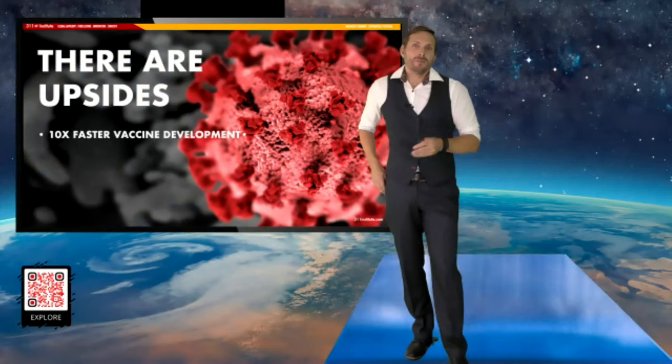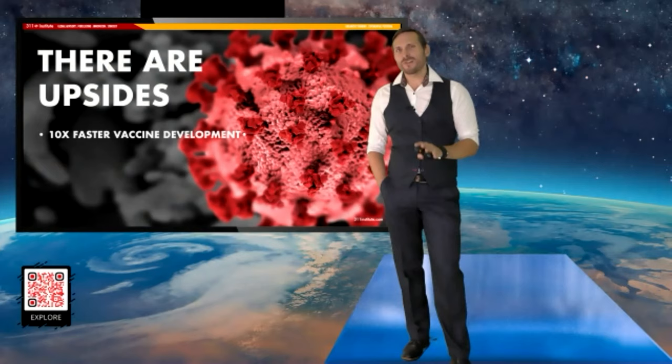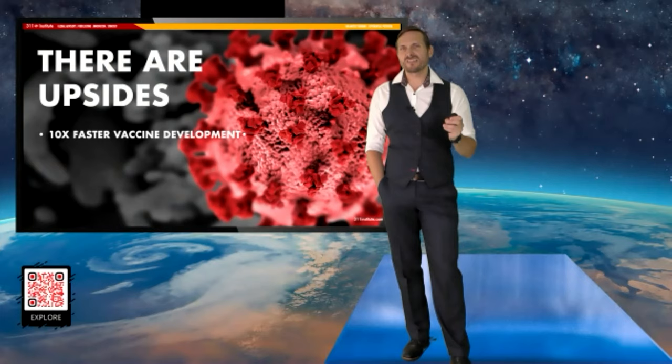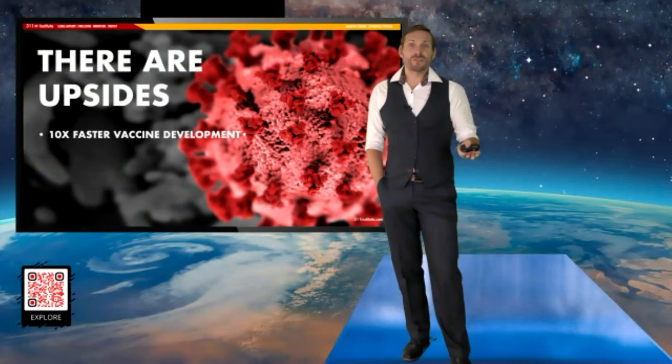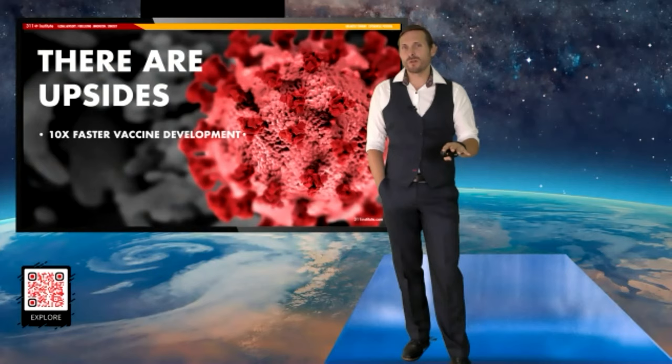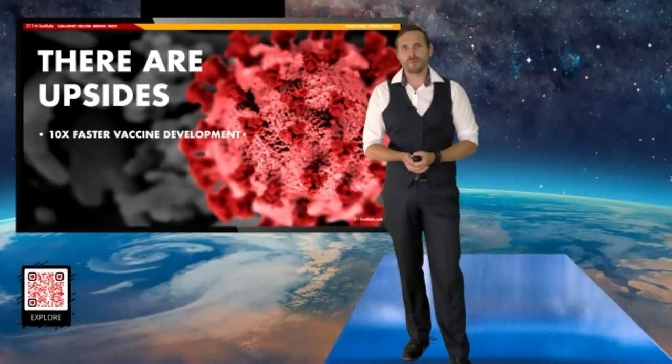But for all of AI's downsides and issues, there are some significant upsides. Thanks to artificial intelligence, a COVID vaccine that really should have taken 10 years to go from concept to people's arms actually took about three months to develop, six months worth of human clinical trials. And here we are, we're all being vaccinated against the global pandemic.